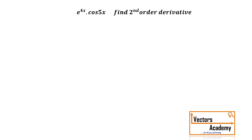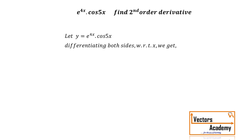Now we will look at second order derivatives in questions which are based on the UV rule. We have y equal to e raised to 4x into cos φx. If you differentiate both sides with respect to x, what we will get by the UV rule is: dy by dx equals e raised to 4x into derivative of cos φx, plus cos φx into derivative of e raised to 4x.